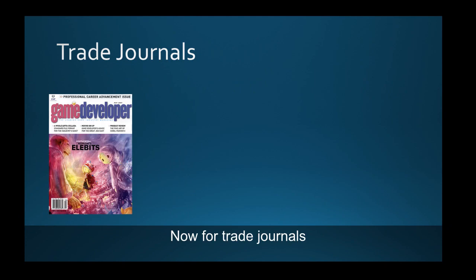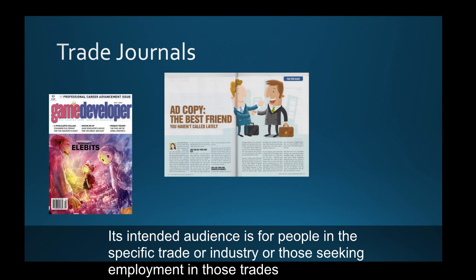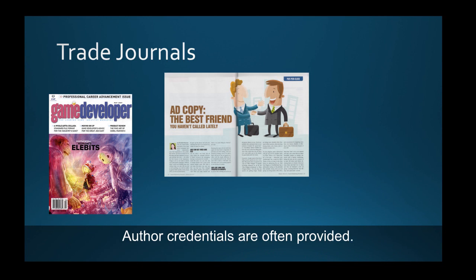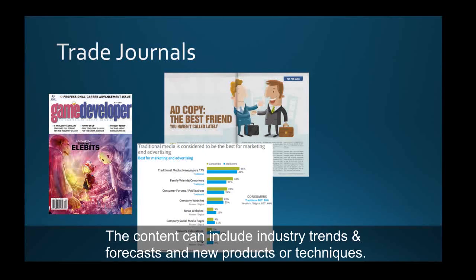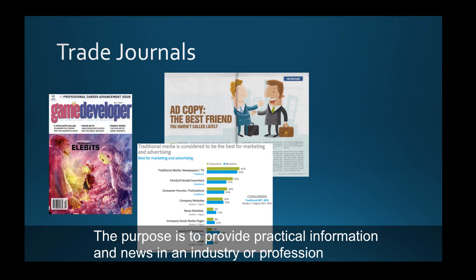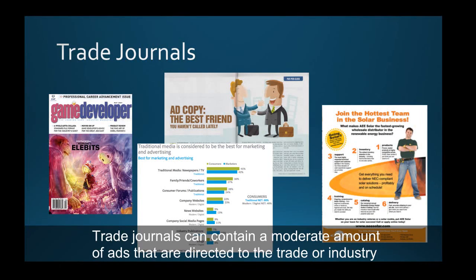Now for trade journals. The cover is usually on glossy paper, and articles can include pictures and illustrations in color. The intended audience is people in a specific trade or industry, or those seeking employment in those trades. The authors are field or industry specialists or expert staff writers, and author credentials are often provided. The content can include industry trends and forecasts, new products or techniques, original industry research, and terminology and jargon of the specific trade. The purpose is to provide practical information and news in an industry or profession and to keep readers informed.